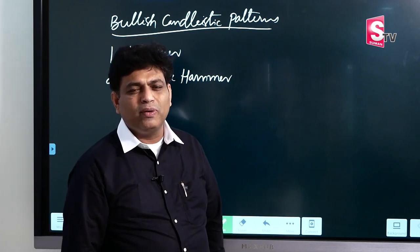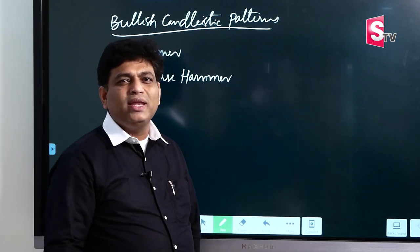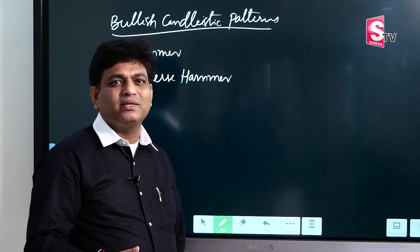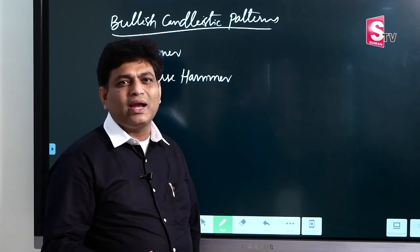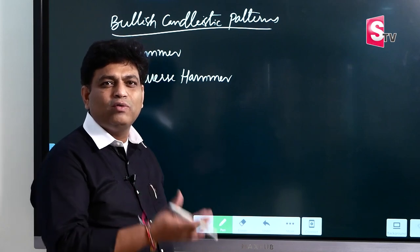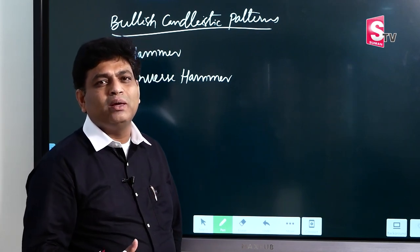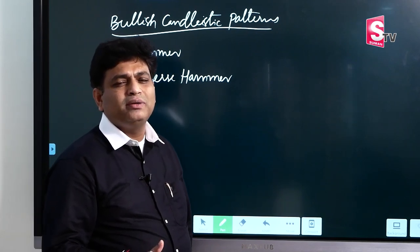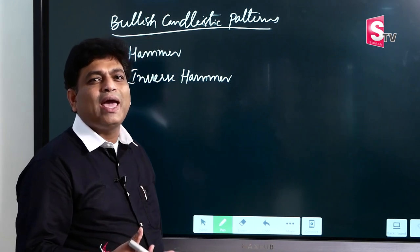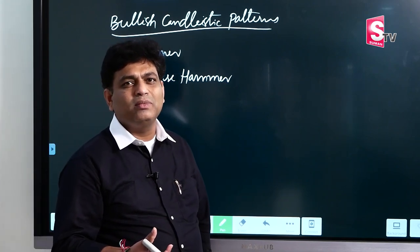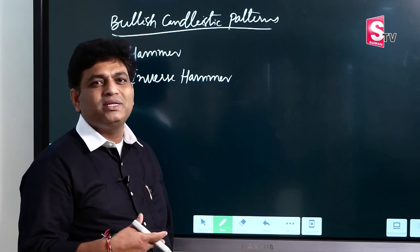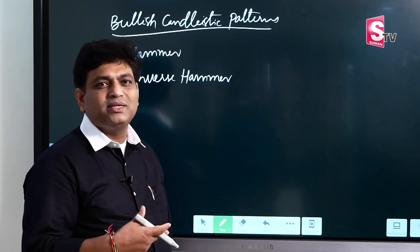The first was an introduction video covering how many candlestick patterns we have. We have 10 important candlestick patterns — 5 bullish and 5 bearish. In the last video, we discussed the hammer. Now in this video, we have 2 bullish candlestick patterns.